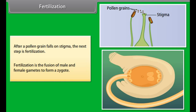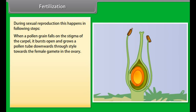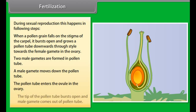A new seed is formed when the male gamete in a pollen grain unites with the female gamete in the ovule. Pollination is the transfer of pollen grains from the anther of a stamen to the stigma of a carpel. Pollen grains are transferred by many agents such as insects, birds, humans, and water. Pollination is of two types: self-pollination and cross-pollination.